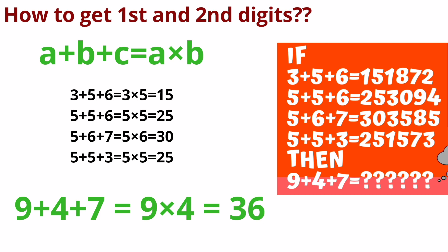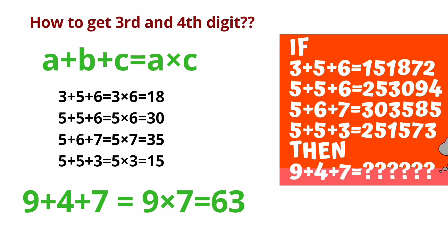We will see the last third and fourth digit. Now how to get the third and fourth digit? What are the tips and tricks? a+b+c equal to a into c. This process we will follow. What is the value of 9+4+7? 9 into 7 which will come 63.